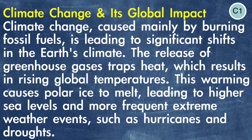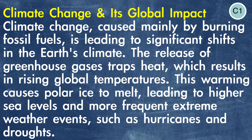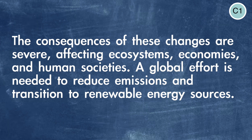So this text is C1 because it starts to use very formal, technical language and complex grammar. Words like 'significant shifts' and 'greenhouse gases' are higher-level vocabulary. The text also explains global consequences, talking about ecosystems and economies and how they are affected by climate change — these ideas are a little more abstract. There are also longer and more complicated sentences, such as 'leading to higher sea levels and more frequent extreme weather events.' This is written for learners who can understand detailed information and are comfortable with more difficult language.